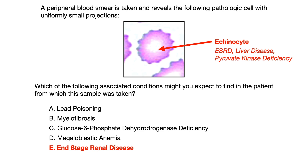Echinocytes are associated with a few things: one, end-stage renal disease; two, states of liver disease; and three, pyruvate kinase deficiency.